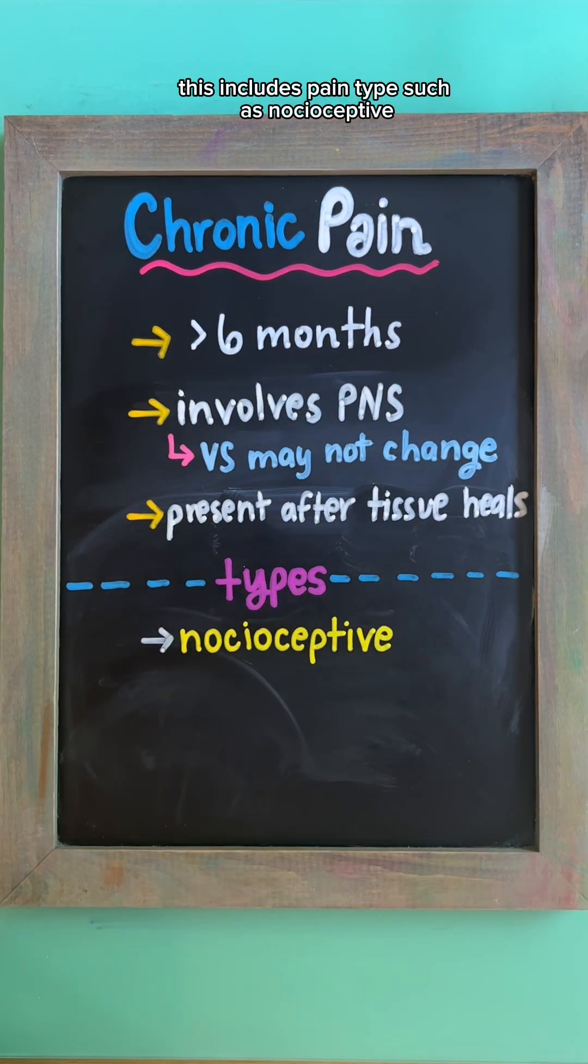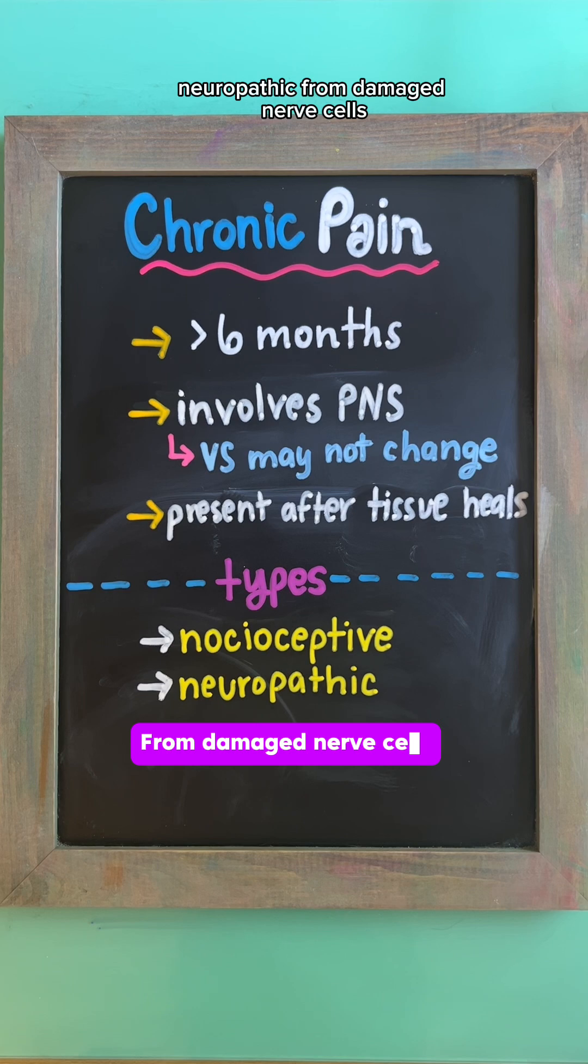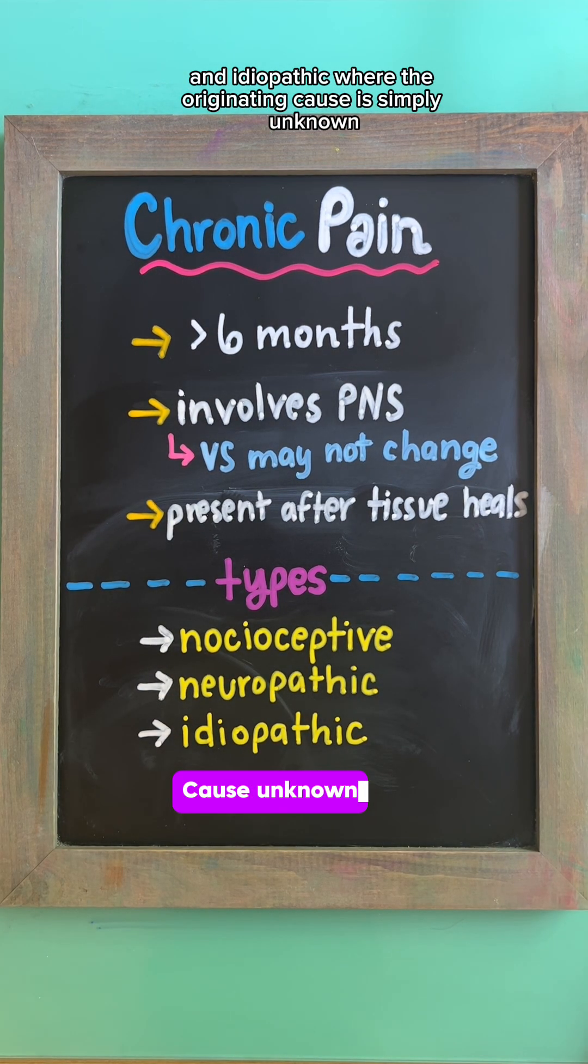This includes pain types such as nociceptive, which is pain caused by damaged tissue, neuropathic from damaged nerve cells, and idiopathic where the originating cause is simply unknown.